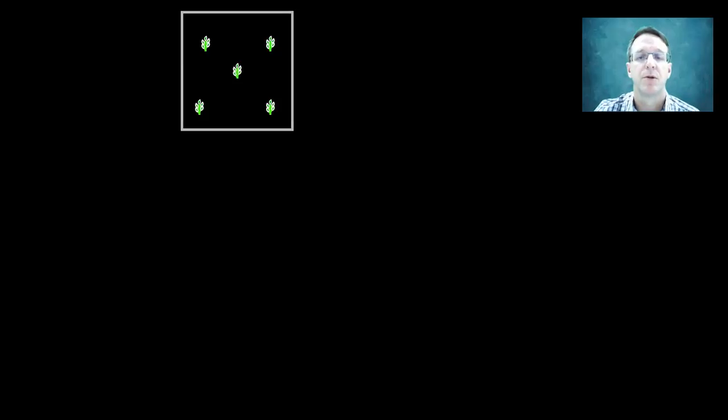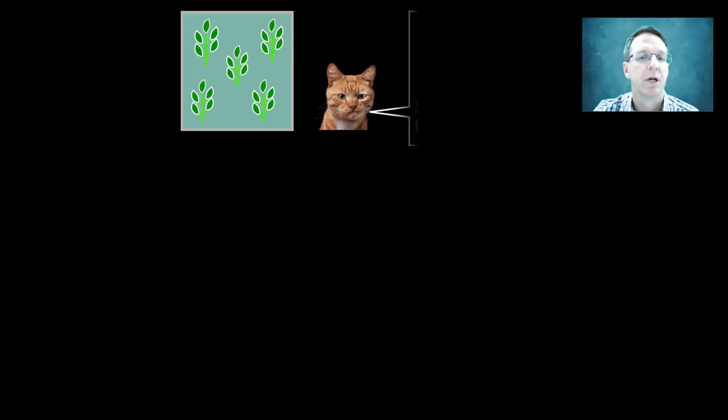So let's get into some examples. You set up a plot of land to test if adding fertilizer to plants helps them grow. You plant the seeds, you regularly spray the plot with liquid fertilizer, and you find that the plants grow really quite well. So your rudimentary conclusion? The fertilizer works. But the skeptic will ask, how do you know the plants wouldn't have grown anyways?